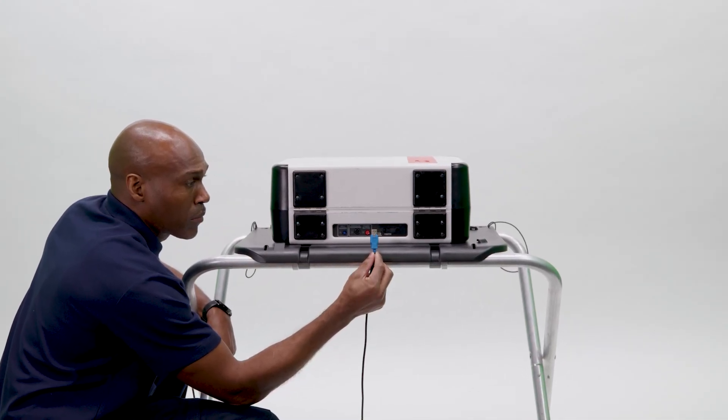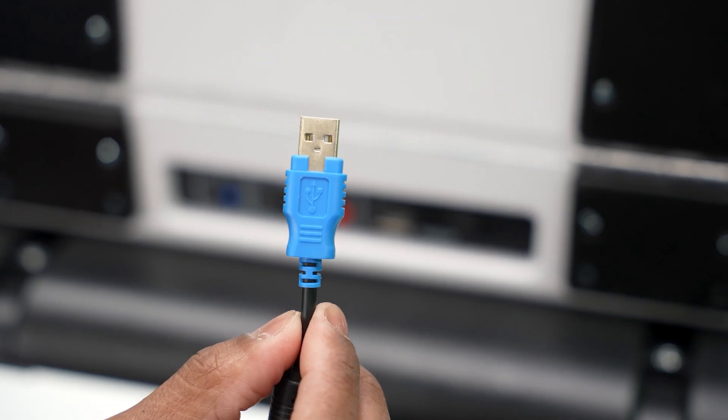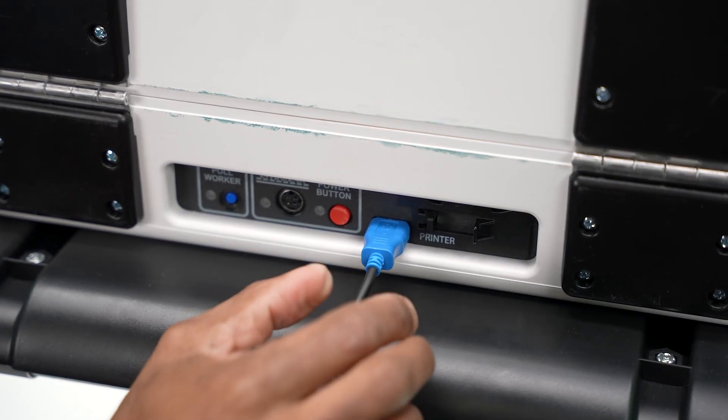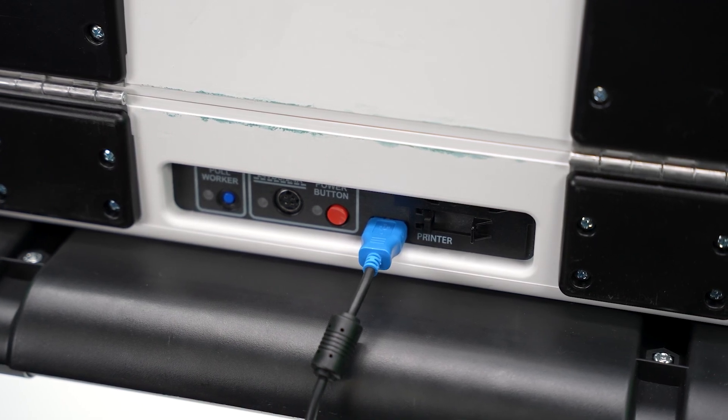Go to the stand with the closed touch writer. Plug the flat blue end of the USB printer cable into the back of the touch writer with the notch facing up.